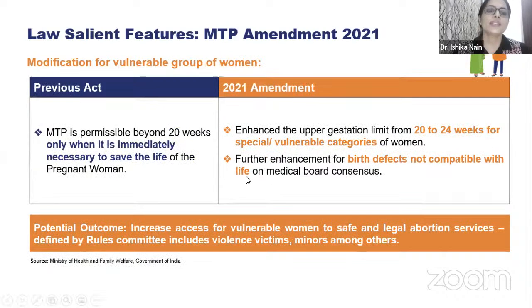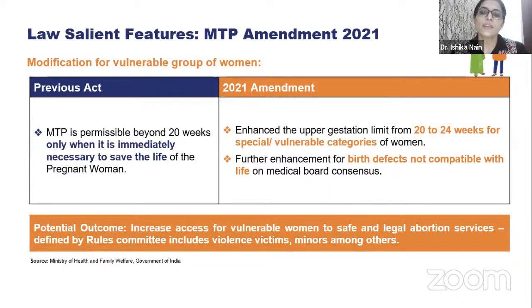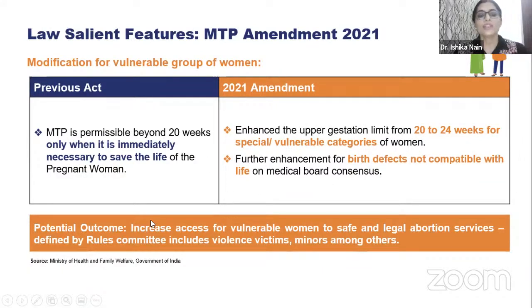MTP is permissible beyond 20 weeks only when immediately necessary to save the life of the pregnant woman. The 2021 amendment has enhanced the upper gestation limit from 20 to 24 weeks for special and vulnerable categories of women. Furthermore, for birth defects not compatible with life, there is no upper limit — this is a welcome change in the 2021 amendment. The potential outcome is increased access for vulnerable women including violence victims, minors, and others defined by the rules committee.